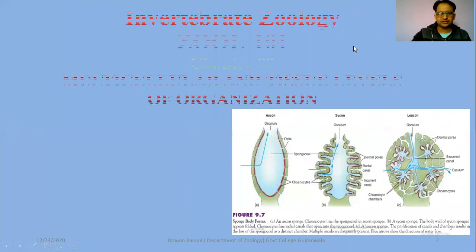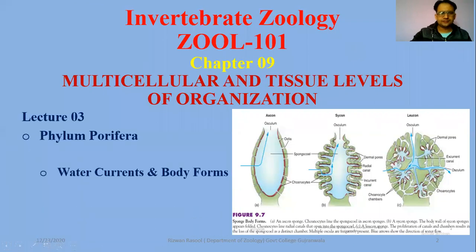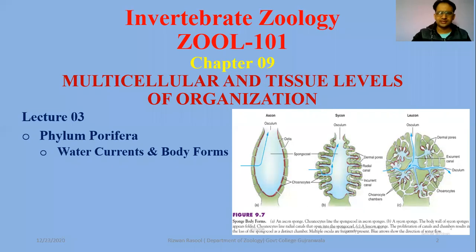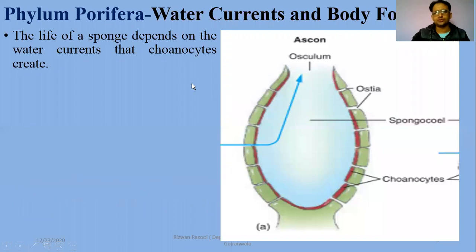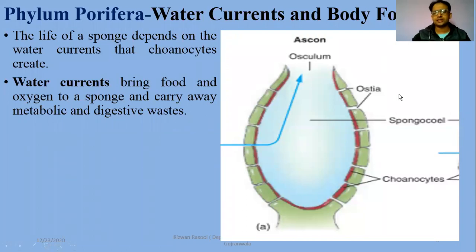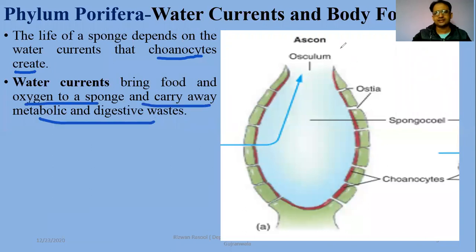In today's lecture, we are going to discuss different body forms and water currents in Phylum Porifera. It includes Ascon type, Sycon, and Leucon types of sponges. The life of sponges is totally dependent upon water currents that their flagellated cells generate. These flagellated cells are called choanocytes, found in their innermost layer. Water currents bring food and oxygen to a sponge and carry away metabolic and digestive waste.